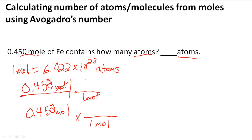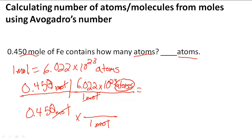We cancel out mole with mole, and we're going to put 6.022 times 10 to the 23rd atoms on top. What we're going to see here is that atoms is the only unit that's left, so we're going to be able to find the number of atoms. I'm going to write that here as 6.022 times 10 to the 23rd atoms. So this is two different ways to write the same thing.